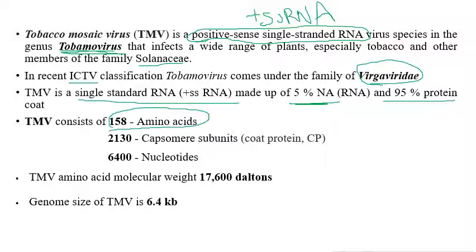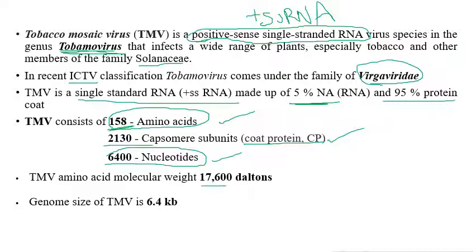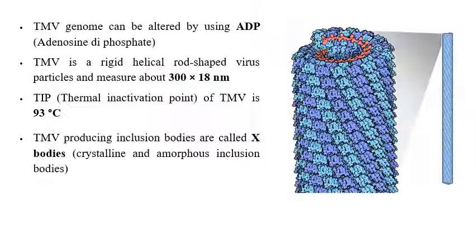Key numerical facts about TMV that are important for exams: TMV consists of 158 amino acids, 2130 capsomere subunits (coat protein subunits, abbreviated CP), and 6400 nucleotides. The molecular weight of the TMV amino acid is 17,600, and the genome size is 6.4 kb because it consists of 6400 nucleotides.